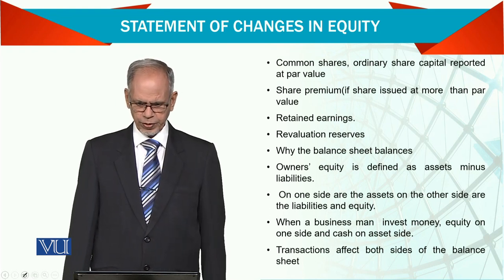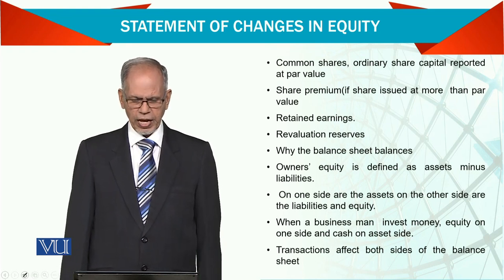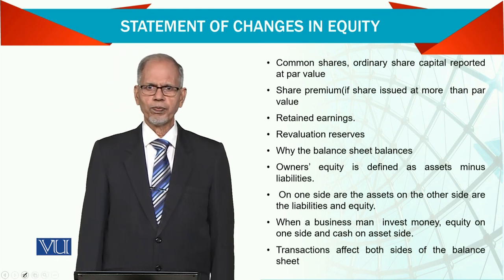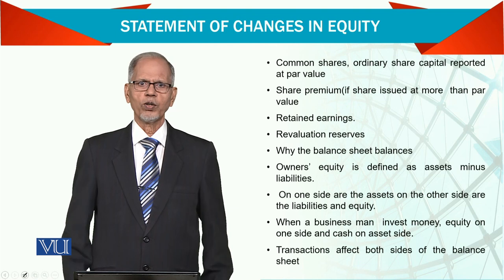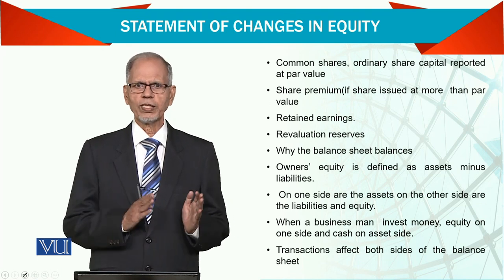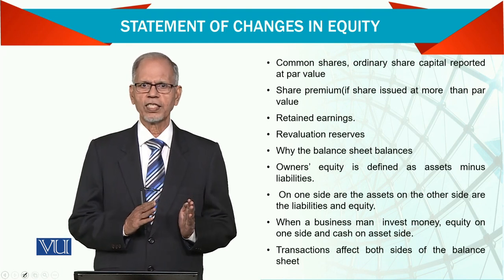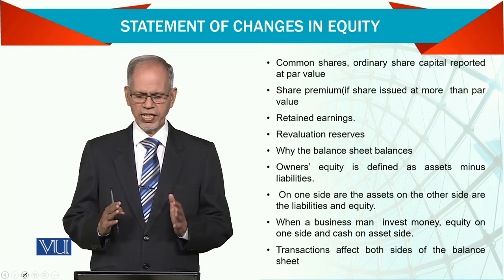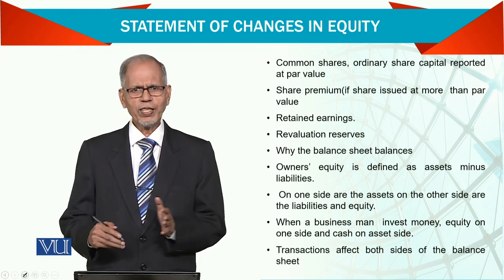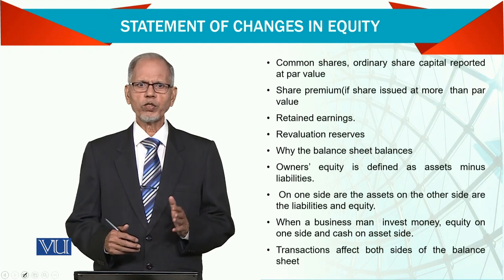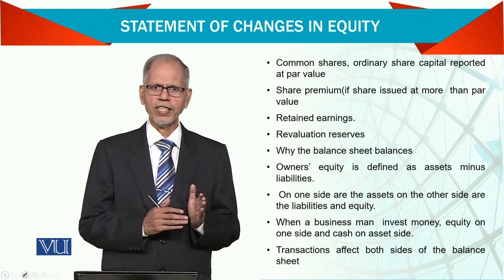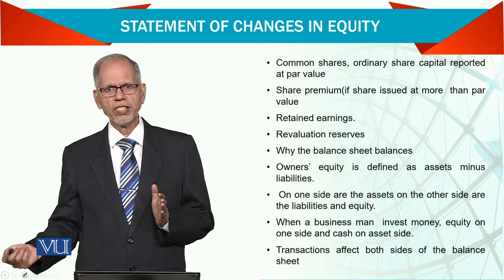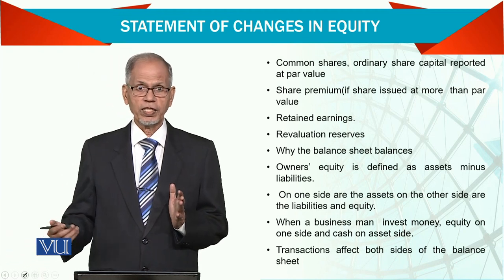Why does the balance sheet balance? Because assets are equal to liabilities plus equity — two sides of it. One side is assets, and the other side is liabilities and equity. So whenever an investor puts anything into the business, it goes to the asset side, and on the other side, it is added to his equity — the shares.